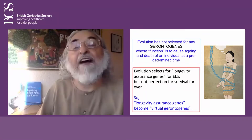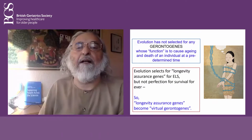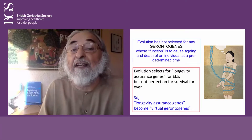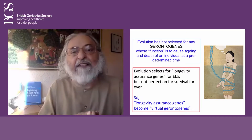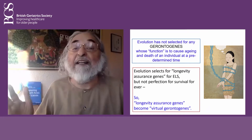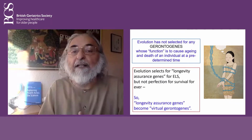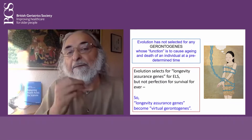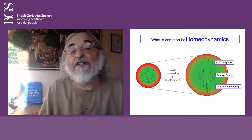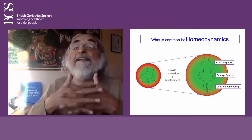Some scientists try to find clocks, measurement mechanisms, programs, and genes for aging. But the genes which associate with age and aging and lifespan are basically general metabolic genes — they are survival mechanisms. Our survival ability is very dynamic.